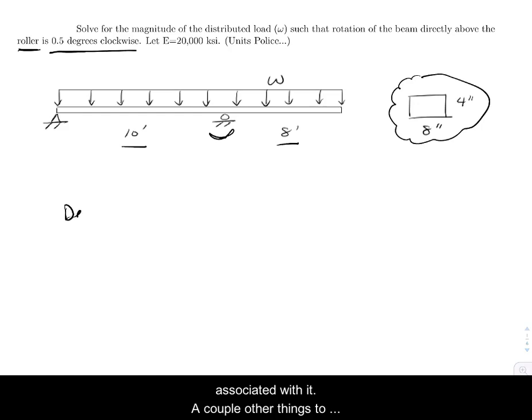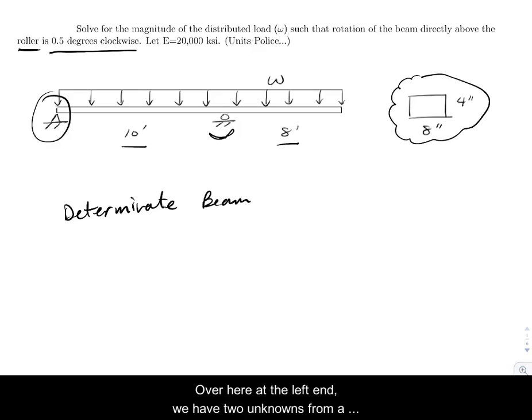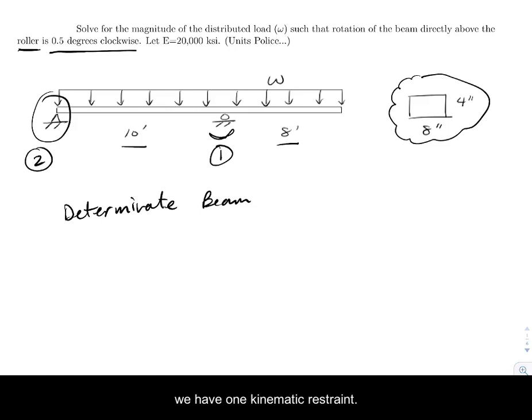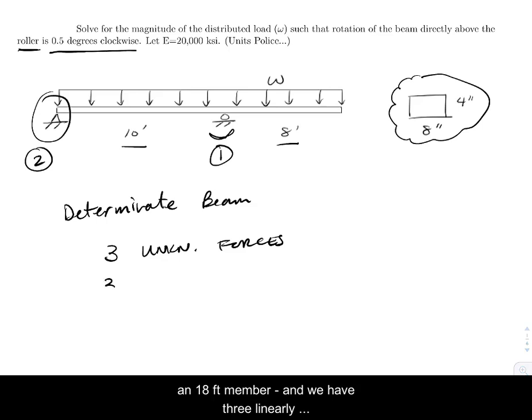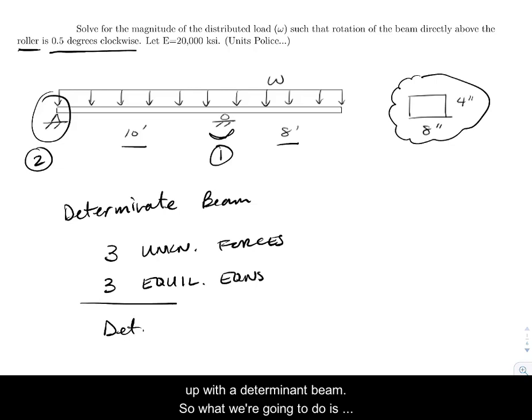A couple other things to highlight: this is a determinate beam. Over here at the left end we have two unknowns, a full translational restraint but no rotational restraint. Over at the roller we have one restraint kinematically, a vertical movement restraint. So we have three unknown forces and we have one member, an 18-foot member, so we have three linearly independent equilibrium equations. The configuration of the supports is stable, so we end up with a determinate beam.